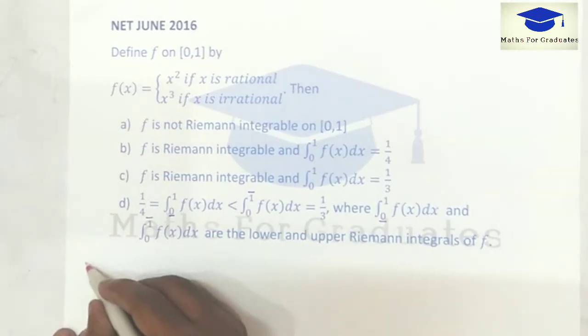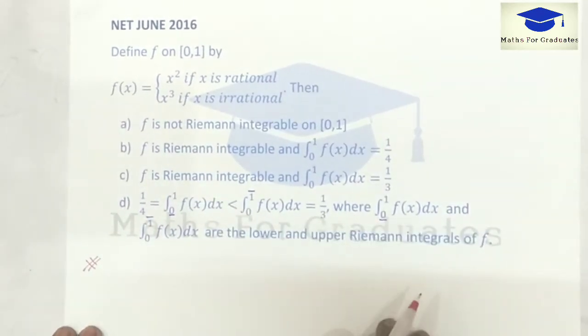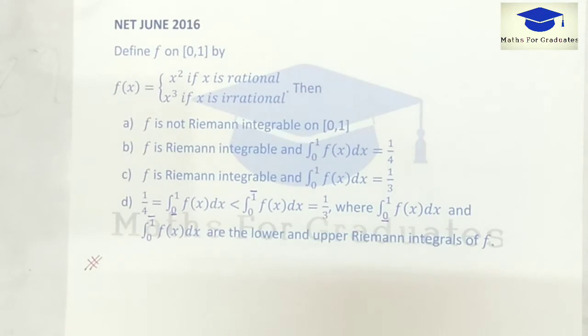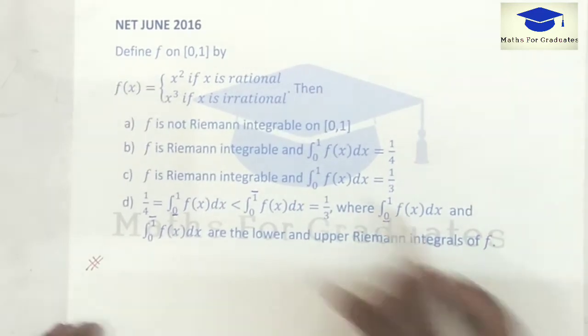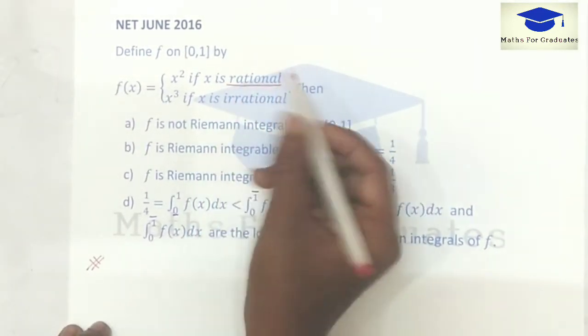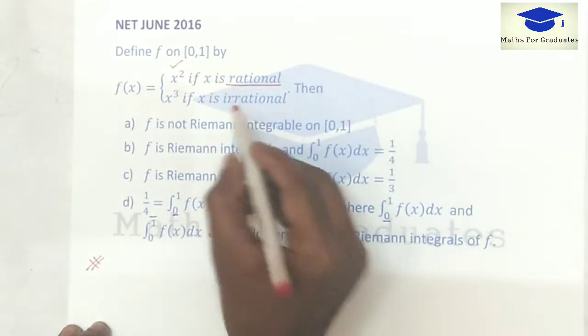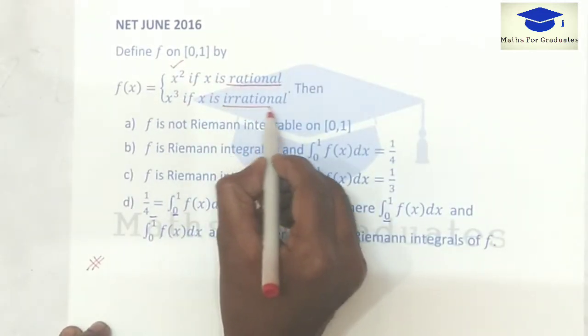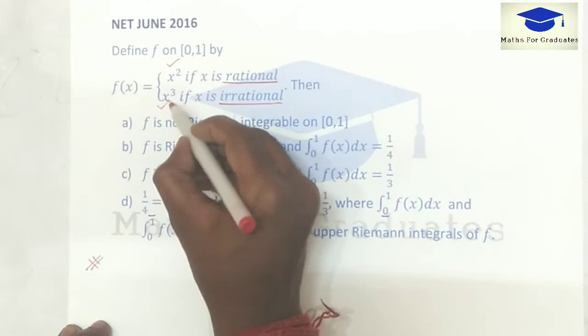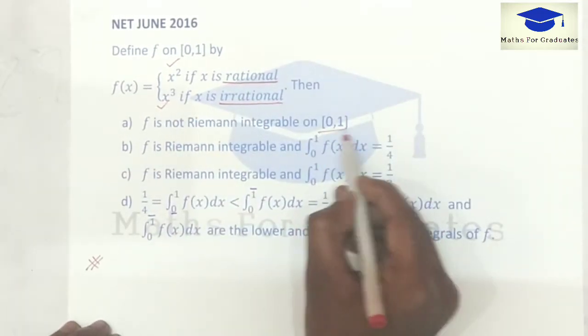Let's continue. According to the given problem we have a function f(x) which is defined accordingly: if x is a rational number then the function is x squared, and if x is irrational then the function is x cubed in the interval [0,1].